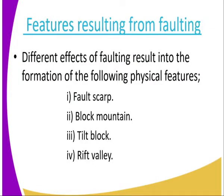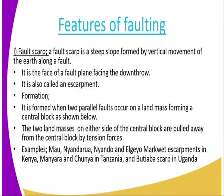Different effects of faulting result in the formation of physical features. So when faulting takes place — when the compression force, anticlinal arching, the tension, the shear and tear forces are subjected to the crustal rocks — it results in physical features like the Fault Scarp, the Block Mountain, Tilt Block, Rift Valley, and all those. We are going to look at each one at a time.